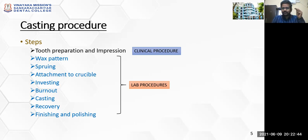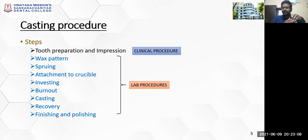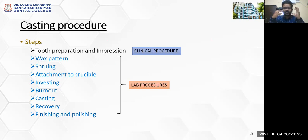The laboratory procedures involve fabrication of a wax pattern. Once the wax pattern is fabricated, we attach a sprue to it. Once the sprue is attached, we mount it on a crucible. The whole set — wax pattern, sprue, crucible — is then invested using investment material to get a mold. Once the mold is ready and the investment material sets, we place the whole setup into the casting machine. In the machine, we first do a burnout procedure to completely remove the wax, creating a mold space, into which we cast molten metal.